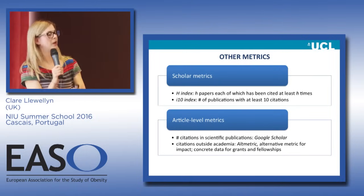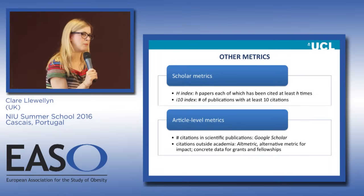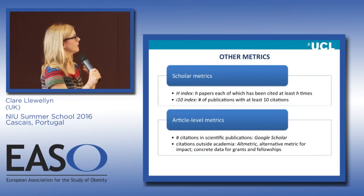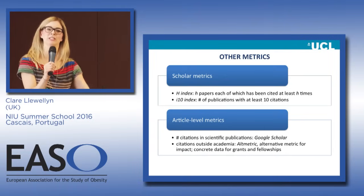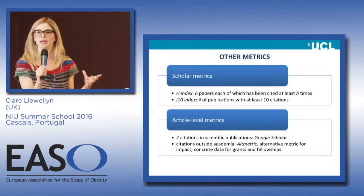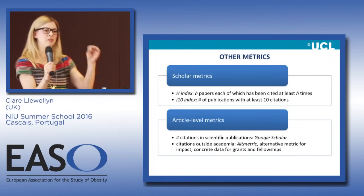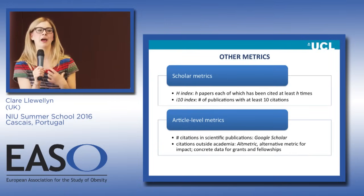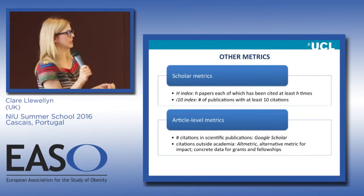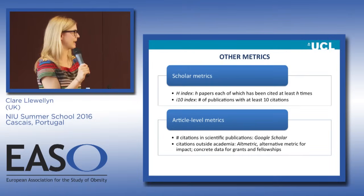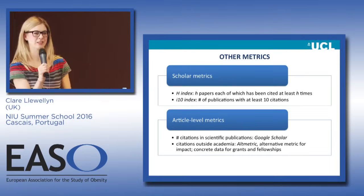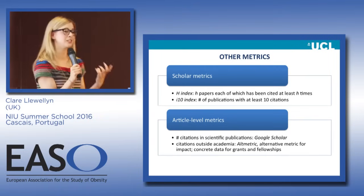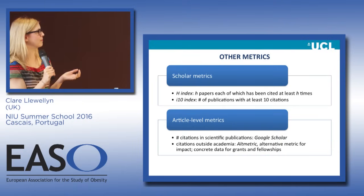There are other metrics as well. There are two broad categories: scholar metrics — how you as a researcher are evaluated — and article-level metrics — how an individual paper is evaluated. In terms of scholar metrics, everyone here has heard of an h-index. An h-index is the number of papers you've had cited the same number of times. If I have an h-index of 10, that means I have 10 papers that have all been cited at least 10 times. People get very obsessed with h-indexes, but it does depend on which area you work in.